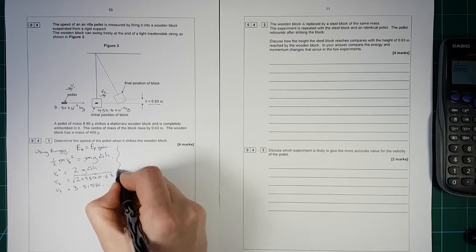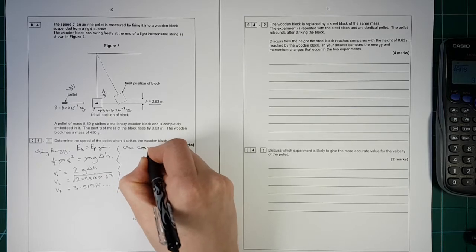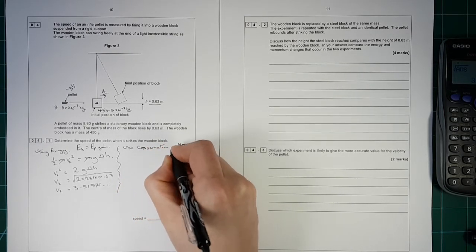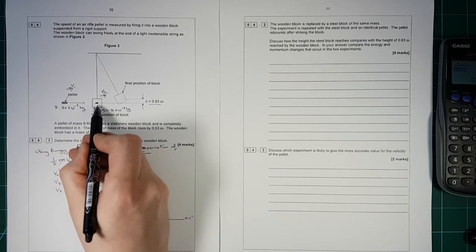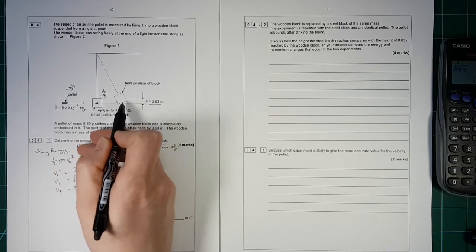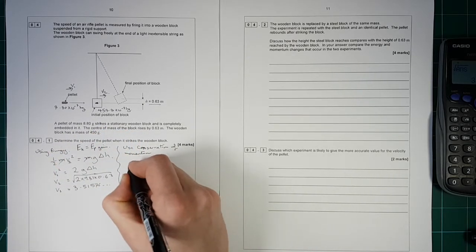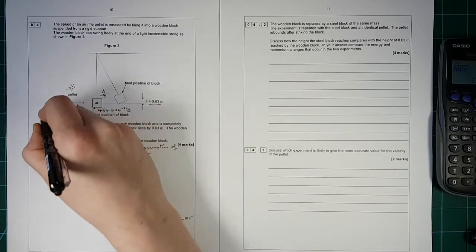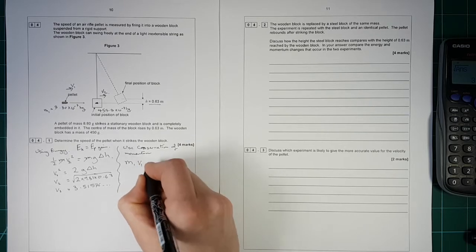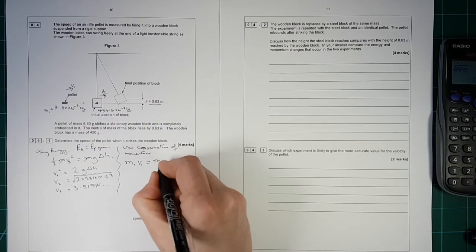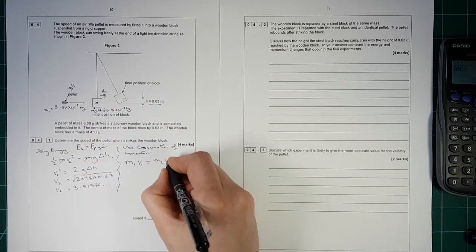Then we, second half of the question, we need to use momentum. So use momentum conservation. So the momentum of the pellet coming in is got to be equal to the momentum of the block moving off because there's nothing else moving anywhere else. So conservation of momentum there. So we've got m1, so that's the mass of the pellet and block, times by v2.